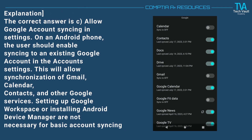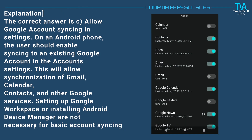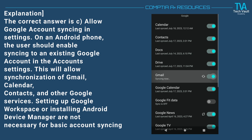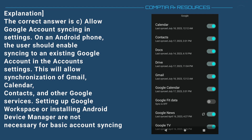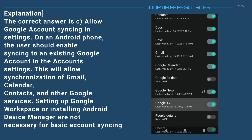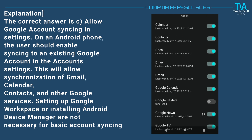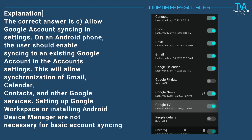The correct answer is C. Allow Google account syncing in settings. On an Android phone, the user should enable syncing to an existing Google account in the account settings. This will allow synchronization of Gmail, Calendar, Contacts, and other Google services. Setting up Google Workspace or installing Android device manager are not necessary for basic account syncing.